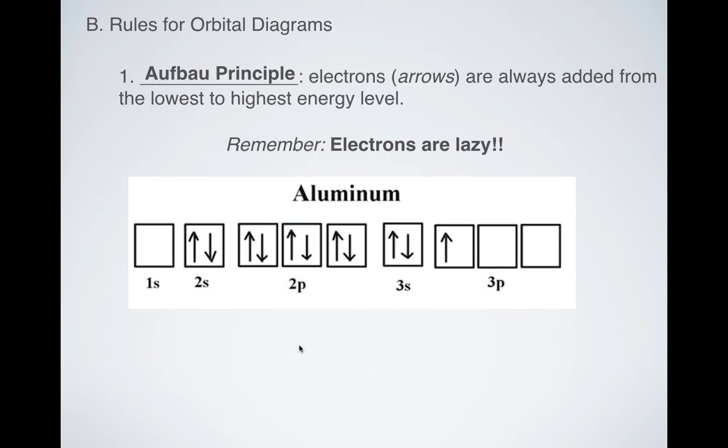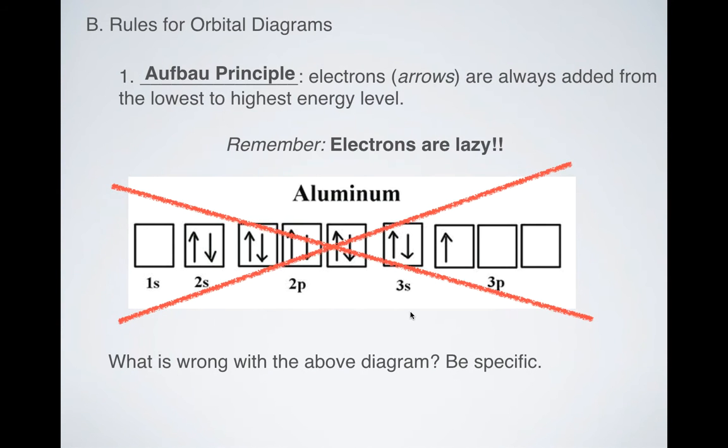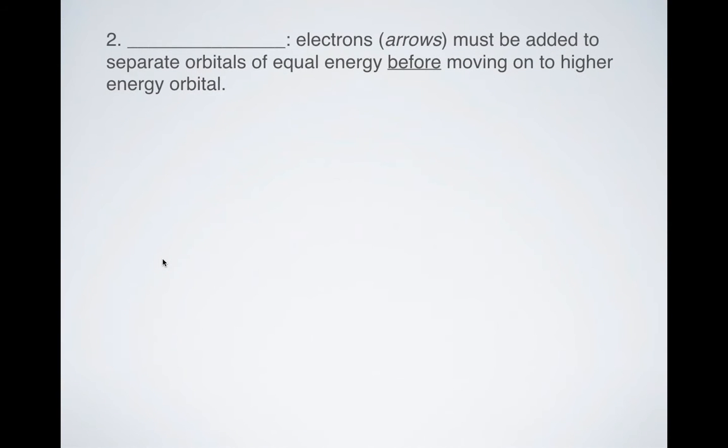So for example, here is an incorrect orbital diagram for aluminum. And it asks, what is wrong with the above diagram? Be specific. It's kind of obvious. You can't just skip the 1s orbital. You have to fill them in sequentially going across. So this is definitely incorrect because you can never have an empty orbital early in your orbital diagram.